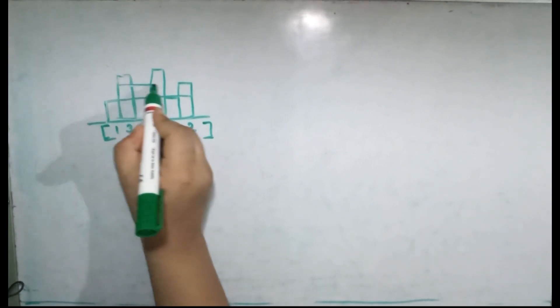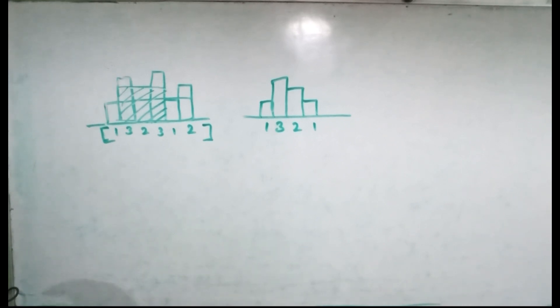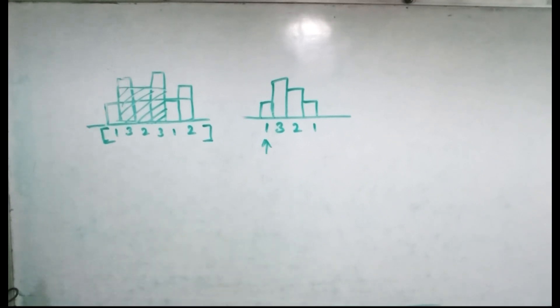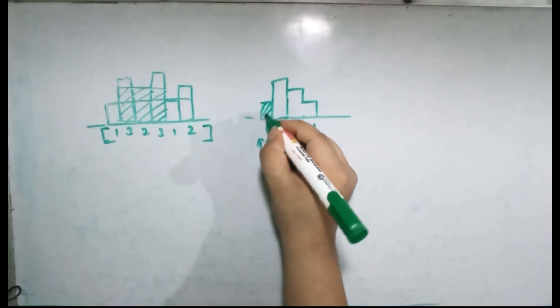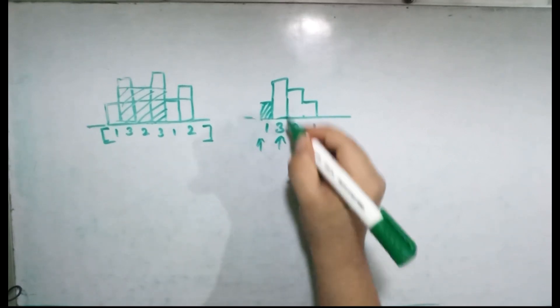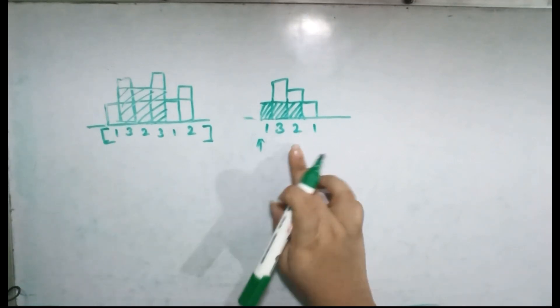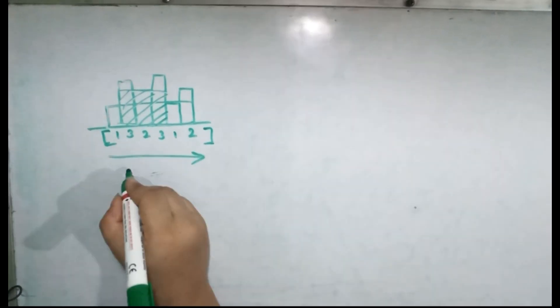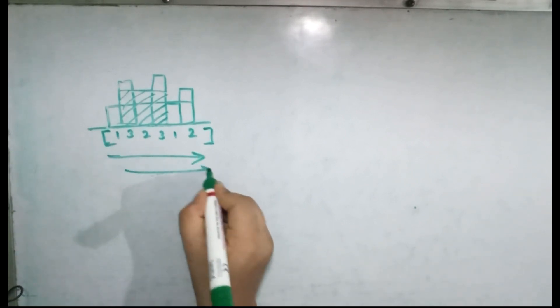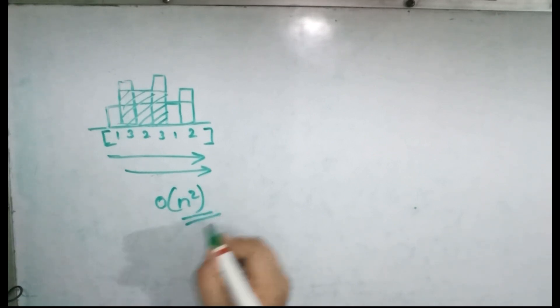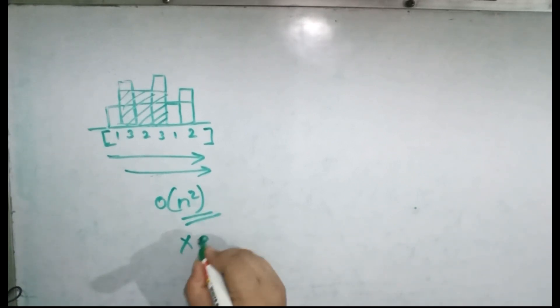The first method that comes to mind is brute force — take every single element and see how far we can stretch its rectangle, storing the maximum area. We use two pointers and iterate from every element to every element. This is an O(n²) approach and is not efficient, so let's think of a more efficient solution.